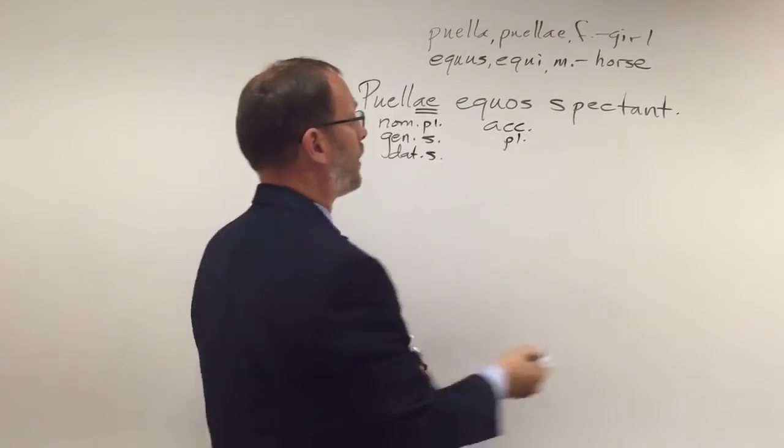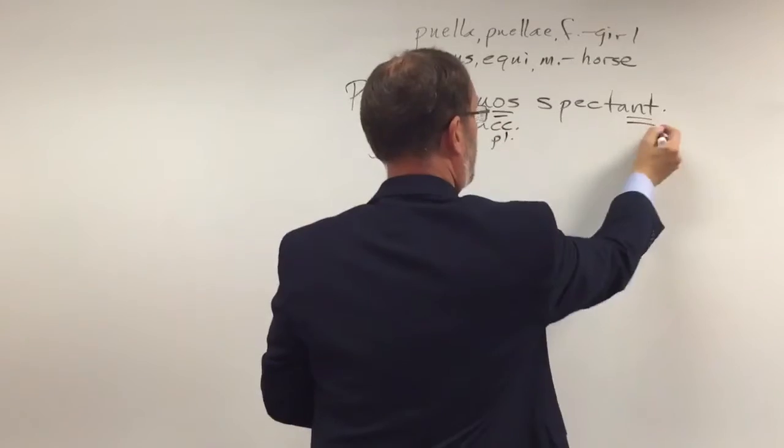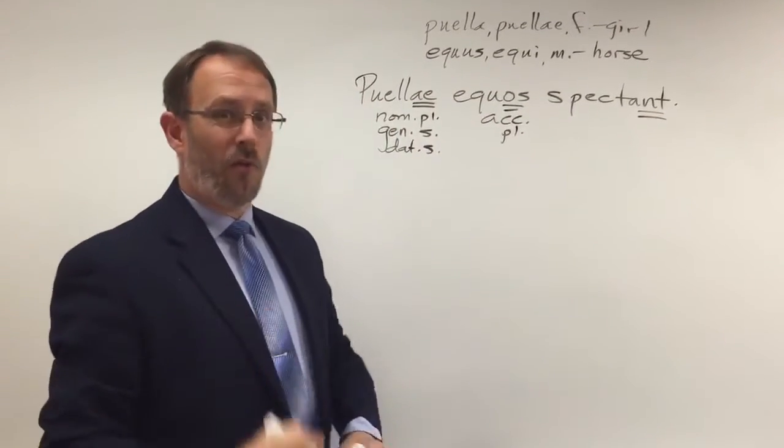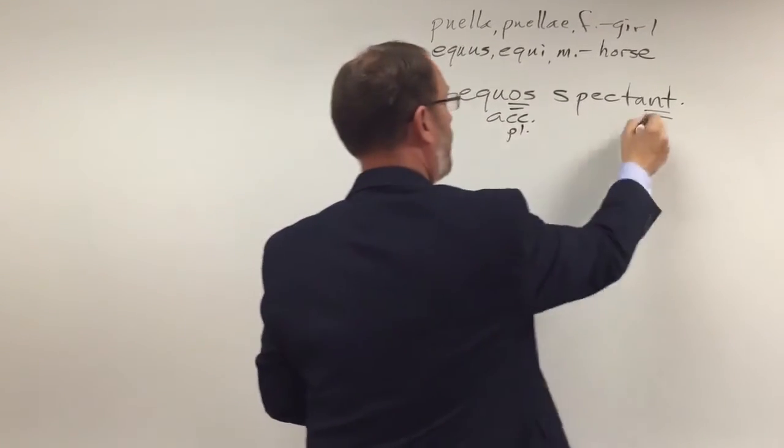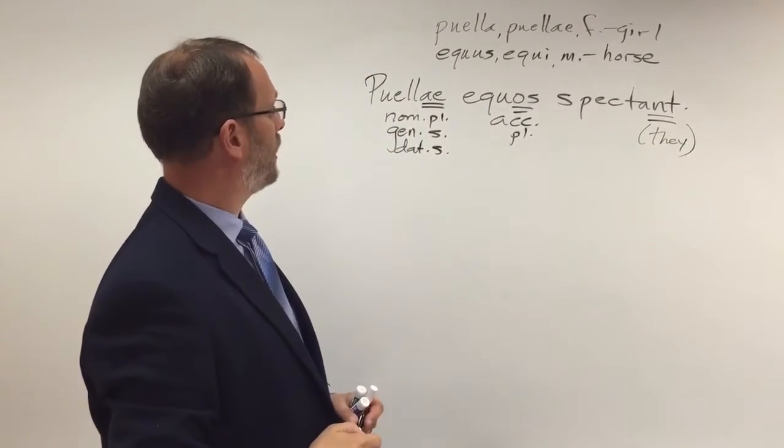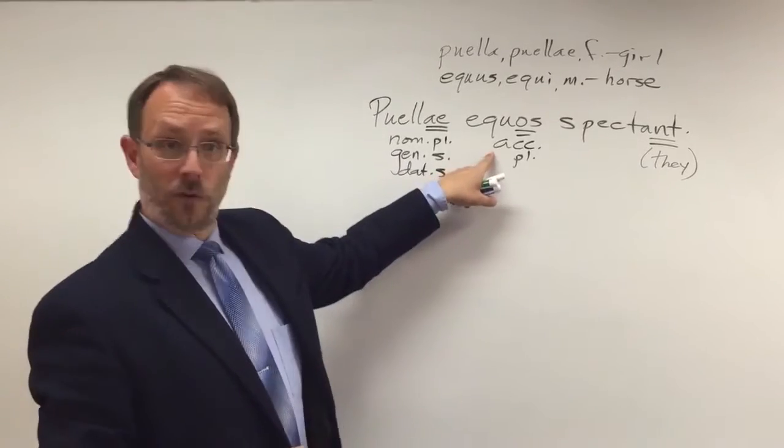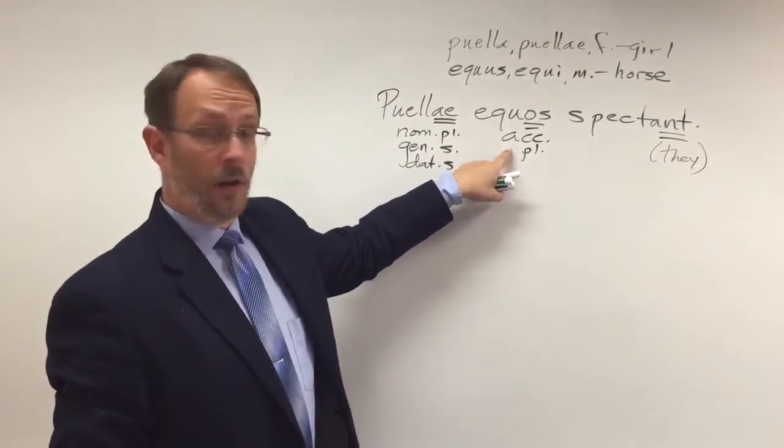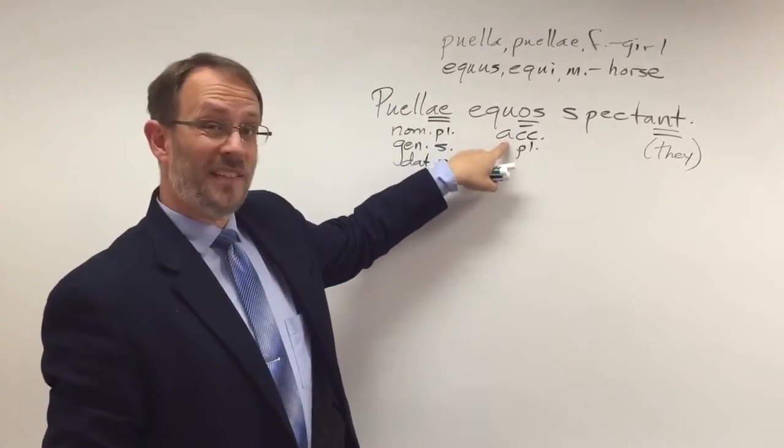And then I look at my verb. I go, okay, well, that N-T, that's a plural verb ending. If you recall, that means they are doing something. So I need some plural subject. I say, well, okay, can horses be the plural subject? It's plural. But that O-S says it's accusative. So that tells me the horses are not doing the action.